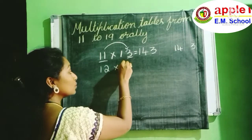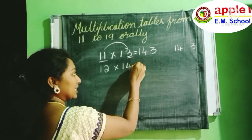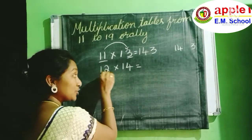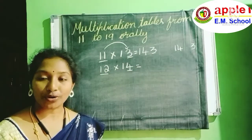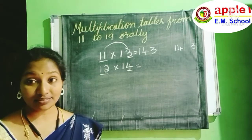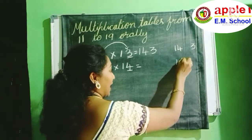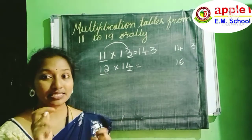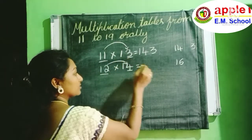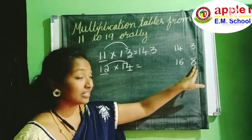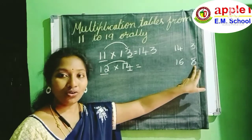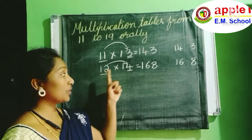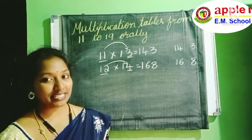I will give another example: 12 into 14. What we have to do? For 12, we have to add 4. 12 plus 4 is 16 — I am writing 16 here. Next, second step: multiply the ones place digits. Two fours are eight. Again, this is a single digit number, so what is the answer? 168. 12 into 14 is 168.